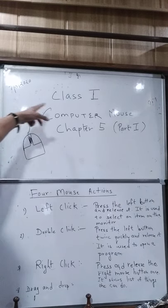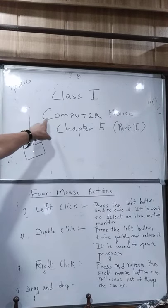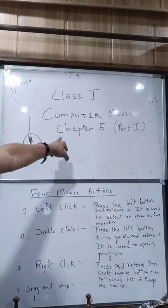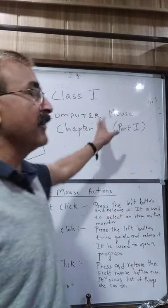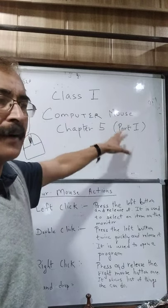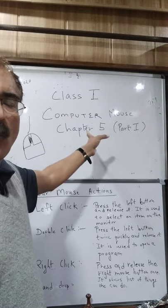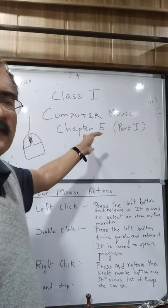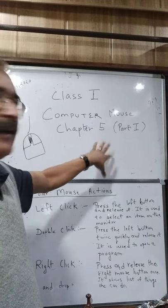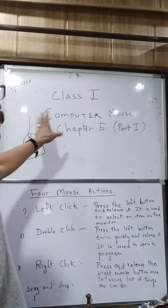Today's lesson is for Class 1, Chapter 5 - Computer Mouse. I have divided it into two parts. This is Part 1. In Part 2, I will tell you practically what happens when you double-click, when you left-click, and when you right-click.